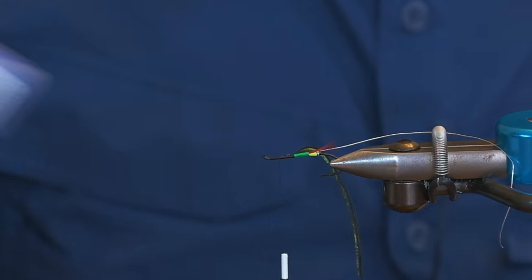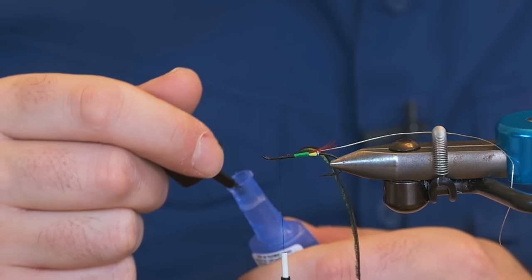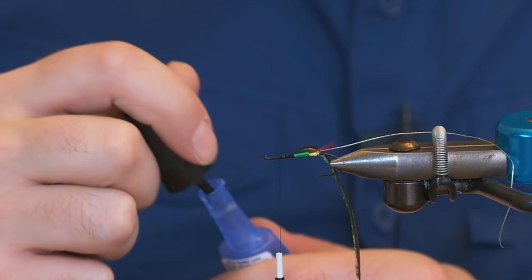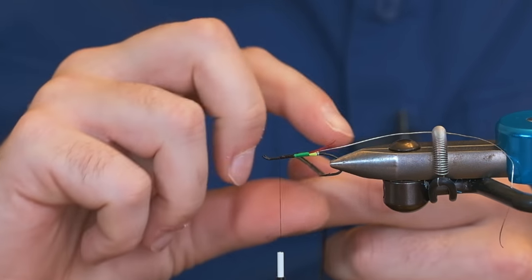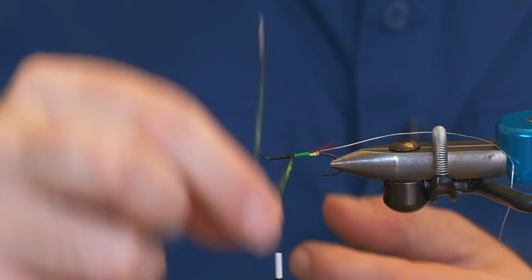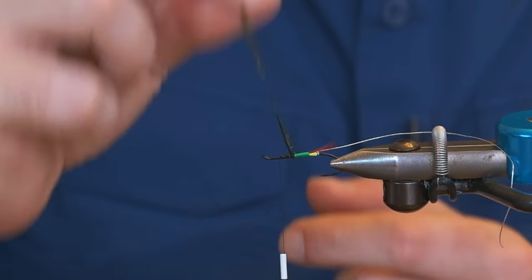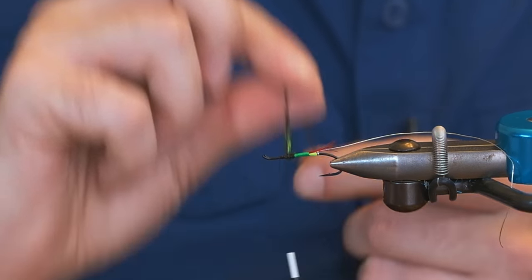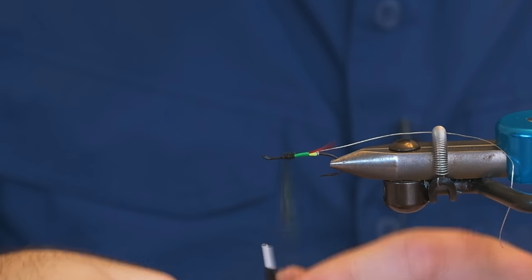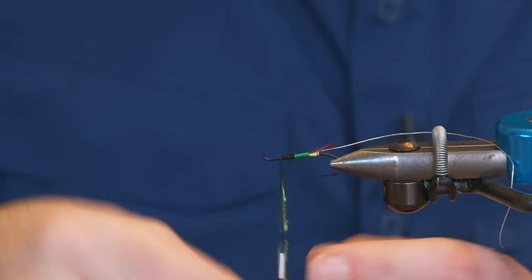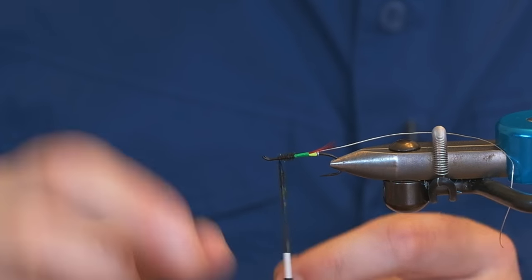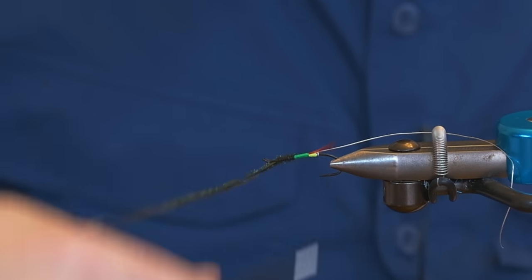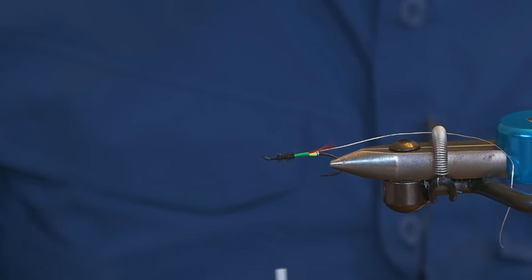So I take a little bit of head cement or today I'm using some Loctite and I just put a little bit on the shank and basically that's going to stop that from unraveling. If you hook fish, should say when you hook fish, should never be if, go into it with when. And even if a fish tears that up a bit, it's still going to be stuck to the hook.